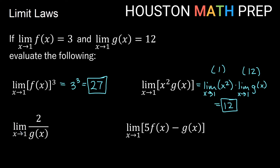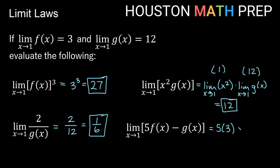For the limit as x approaches 1 of 2 divided by g(x), the bottom limit is 12, not 0, so we're safe. The limit of 2 is just 2, divided by 12, which reduces to 1/6. For the limit as x approaches 1 of 5f(x) minus g(x), we use the constant multiple and subtraction rules: 5 times the limit of f, which is 3, gives 15, minus the limit of g, which is 12, giving a final limit of 3.